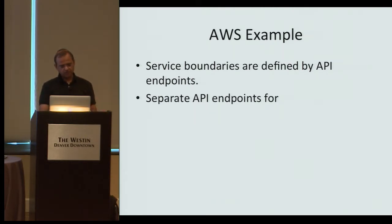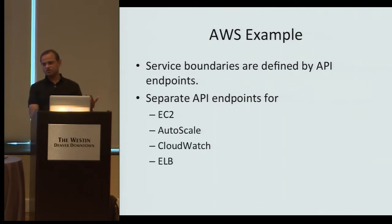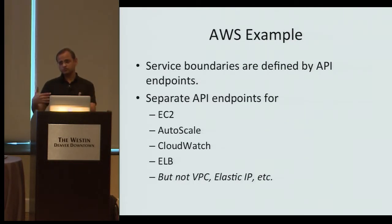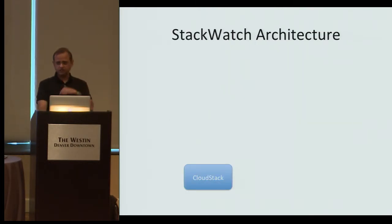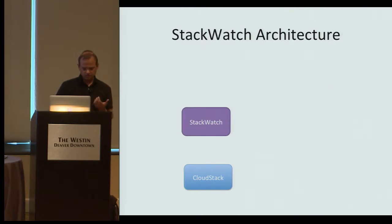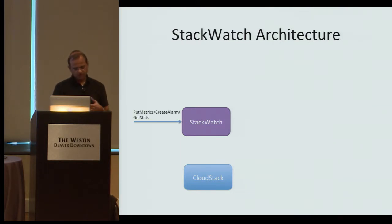Amazon's service boundaries are defined by API endpoints — EC2, autoscale, CloudWatch, ELB — but not for VPC or Elastic IP. That gives us a useful starting point for structuring a service. For StackWatch, I didn't want to use Java. I used a language called Clojure, which is a JVM language but not Java. StackWatch is a Clojure process that runs outside of CloudStack, and you can apply CloudWatch APIs into StackWatch.